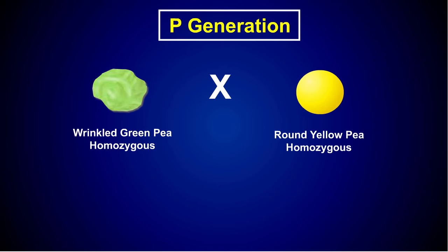A dihybrid cross illustrates the potential results from crossing individuals that differ in regard to two traits. In this case, the parents, or P generation, differ in both pea color and shape.